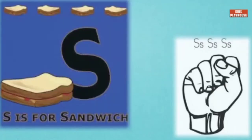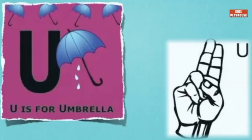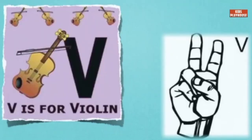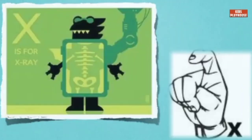S is for sandwich. T is for tiger. U is for umbrella. V is for violin. W is for wagon. X is for x-ray.